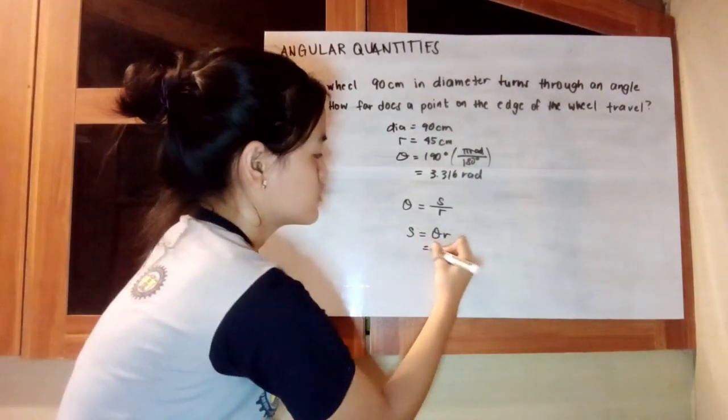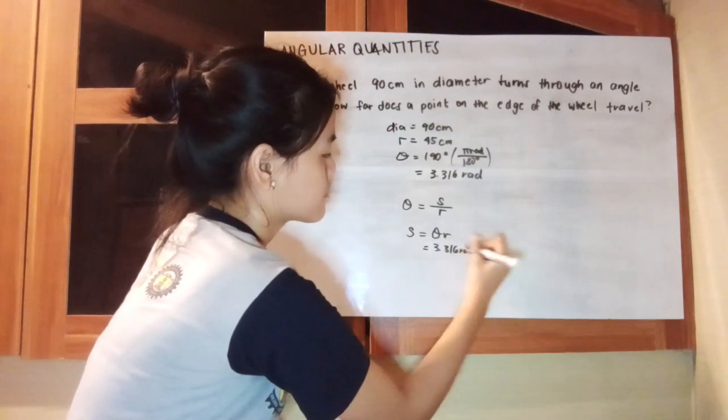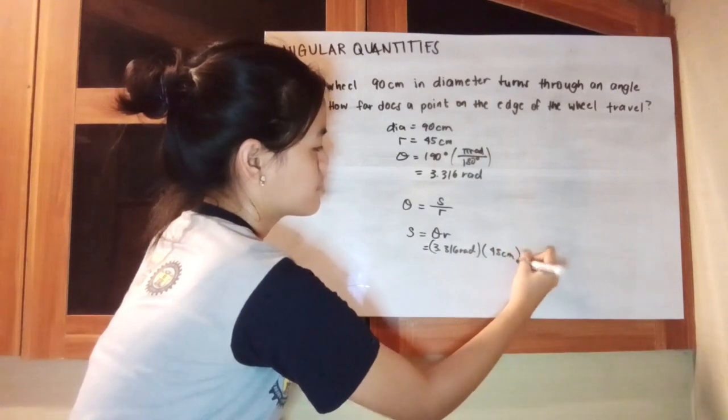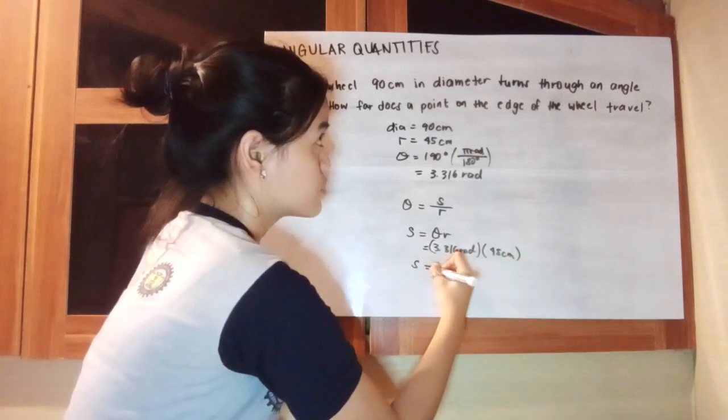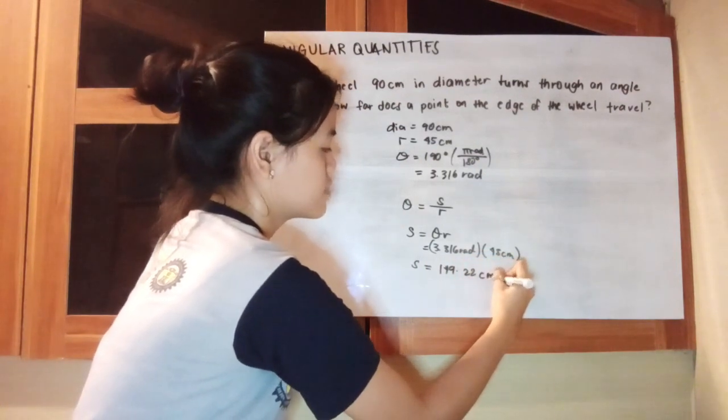We just have to substitute the values: 3.316 rad times 45 cm. And that is equivalent to 149.22 cm.